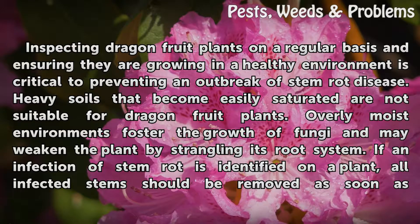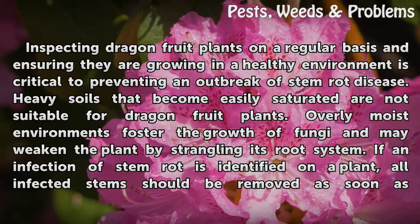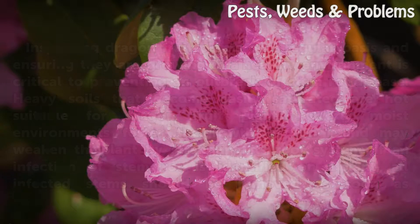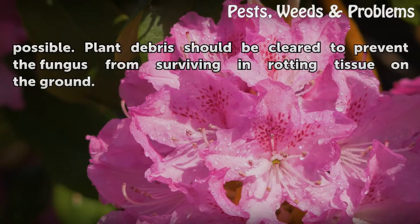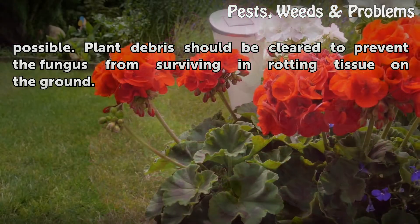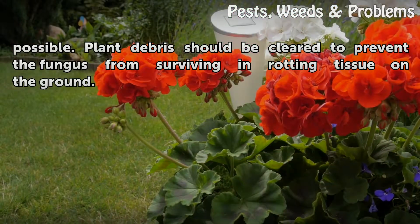Overly moist environments foster the growth of fungi and may weaken the plant by strangling its root system. If an infection of stem rot is identified on a plant, all infected stems should be removed as soon as possible. Plant debris should be cleared to prevent the fungus from surviving and rotting tissue on the ground.